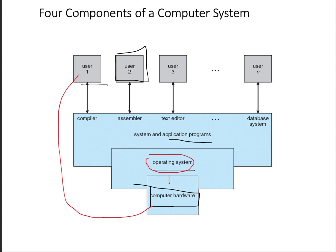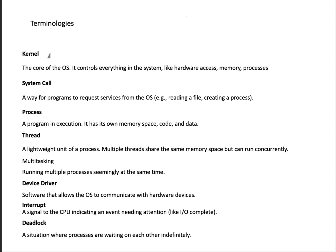Now that we know the definition of OS, we need to know the terminologies used in OS. The first terminology is the kernel. The kernel is the core part of the OS — it is the central piece. The OS has several components that come together to form it, and the kernel is one key component that plays a crucial role, making it the core of the OS.